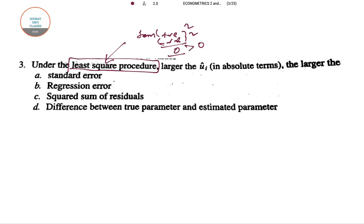So this is positive always if there is any kind of fluctuation in the data. So under the least square procedure or least square estimation larger the ui hat that's the estimated value of ui in absolute terms, the larger the square sum of residuals. So if ui is increasing so summation ui square will also be higher. And remember that summation of ui square is not equal to summation of ui whole square. So this time option number C is correct.